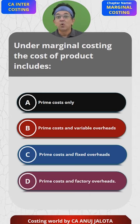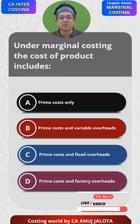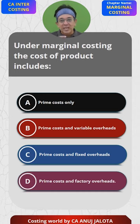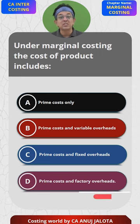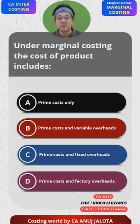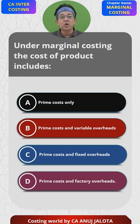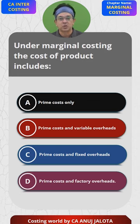What does Marginal Costing say? It says that there are two types of costs. One is Variable Costs, which are incurred for a product, and the other is Fixed Costs, which are not incurred for a product — these are Period Costs. Therefore, a Product Cost will only include Variable Costs.